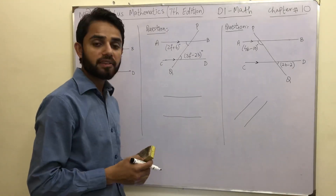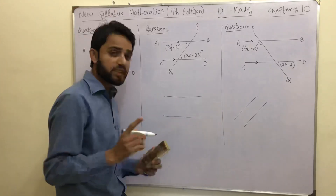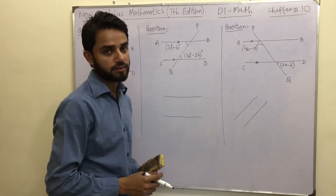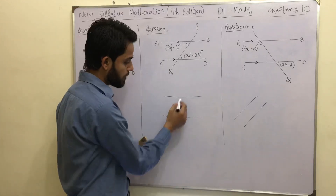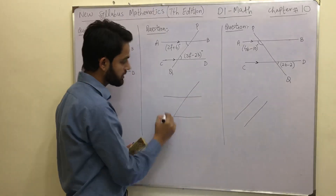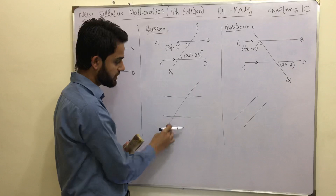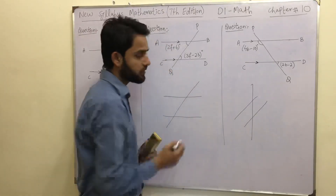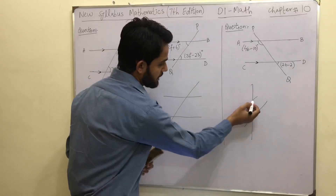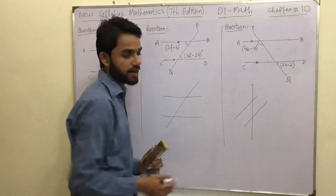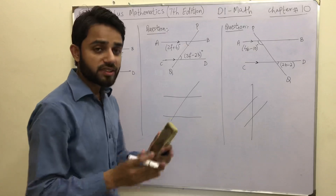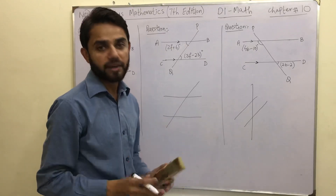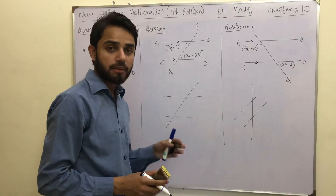Now, what does it mean by a transversal line? A transversal line is a line that cuts parallel lines. We have two parallel lines here, and this is the transversal because it cuts these two lines. This is also a transversal because it is cutting these two parallel lines. Once a transversal cuts two or more parallel lines, it makes some angles.